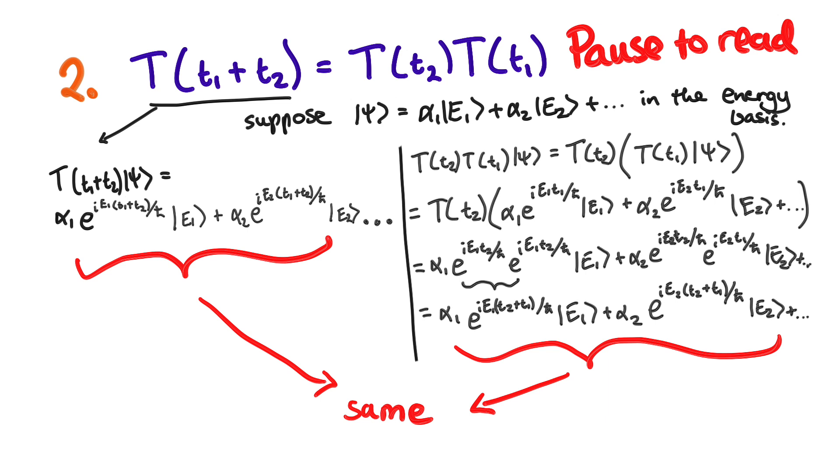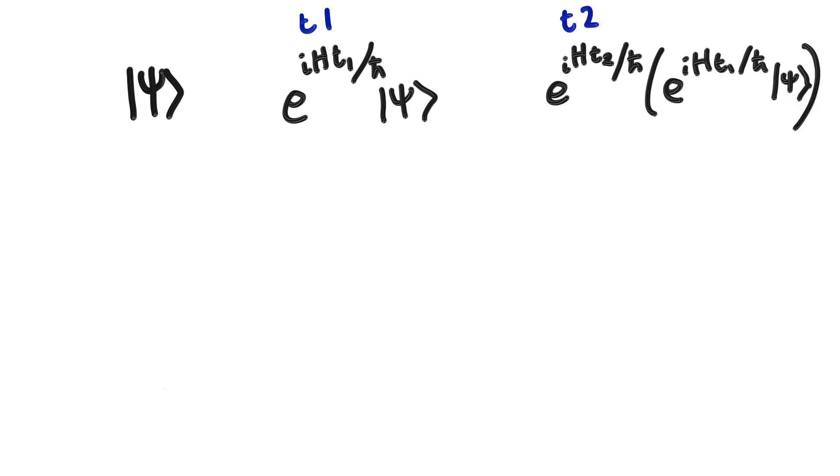Say you started with this state and you are watching it as time goes by. At time t1, you see that it's this. Then you check again after t2 amount of time, and so you update the state again. But then say your friend had only checked on the state once at the very end. Then their state is this. But you should both agree, I mean there is only one state.